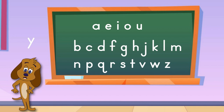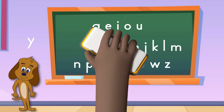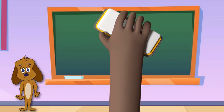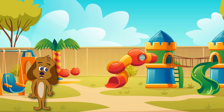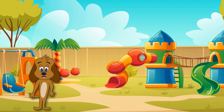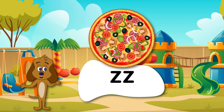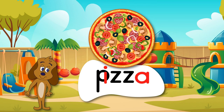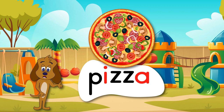We have some great words to learn today! Let's look at some words that follow a pattern. The pattern is two of the same consonants with vowels on each side. The double consonants separate two parts of a word.